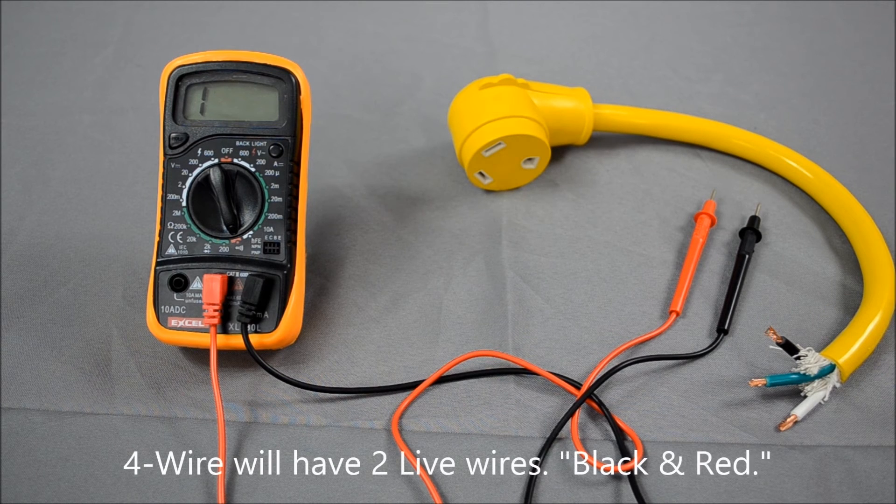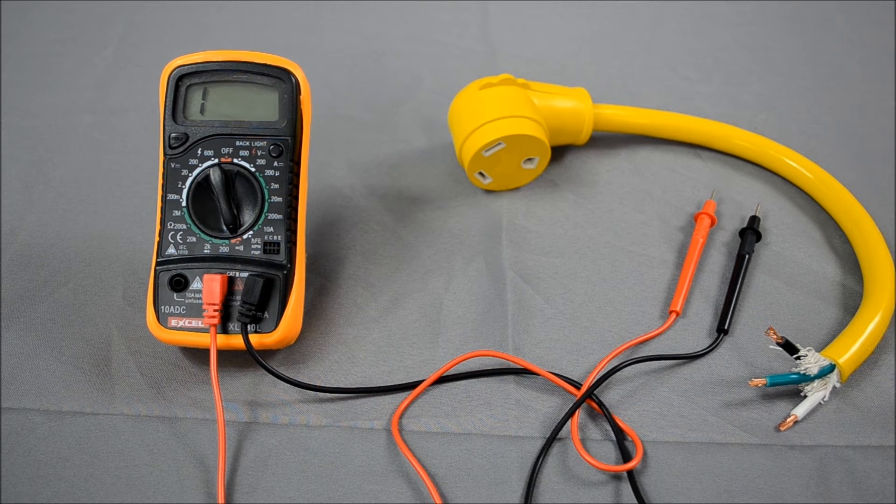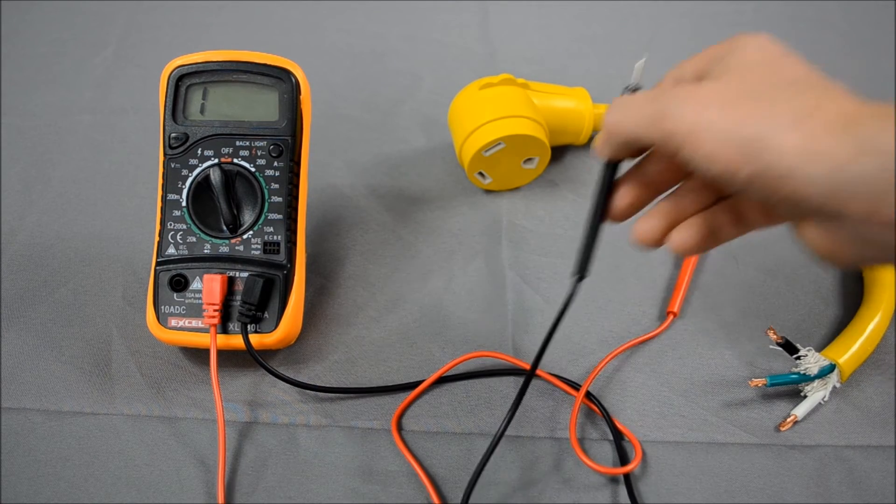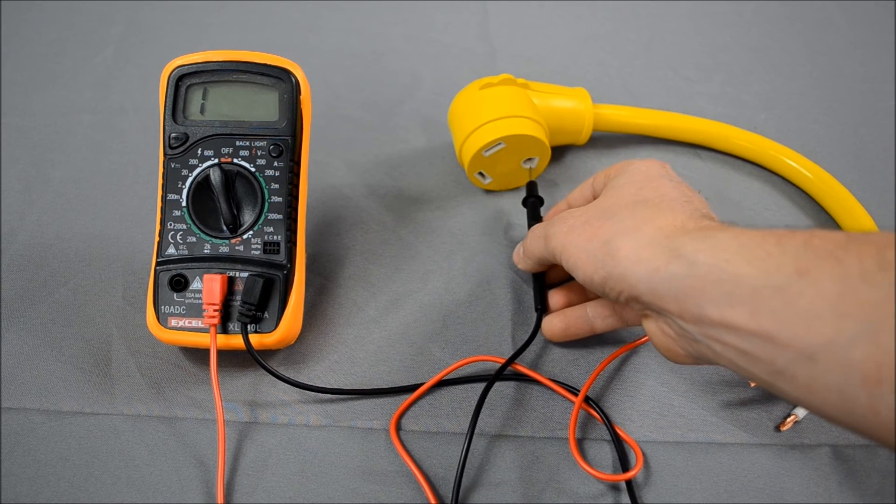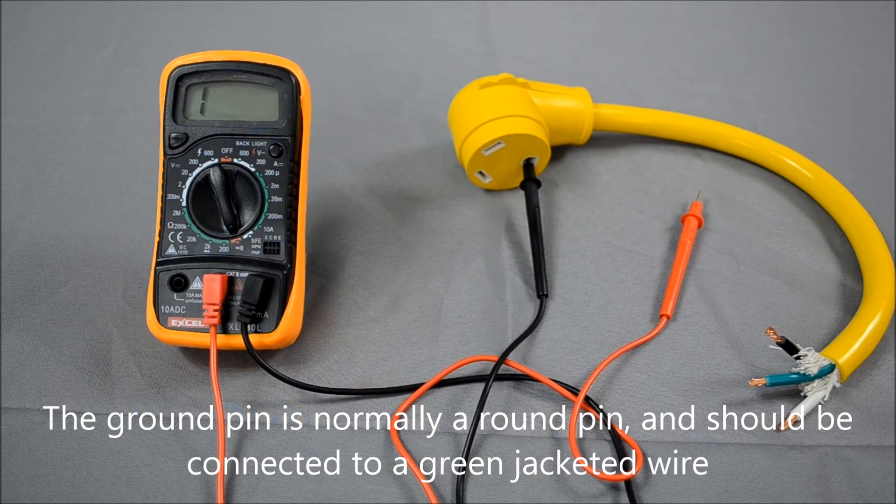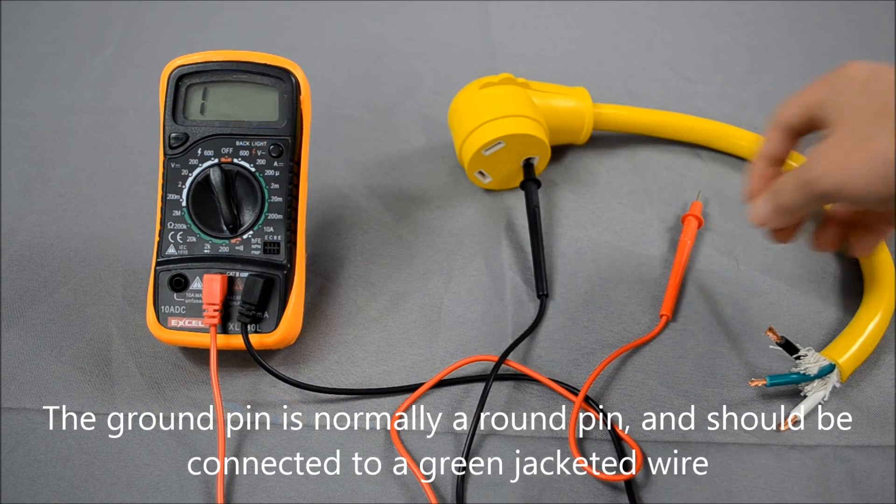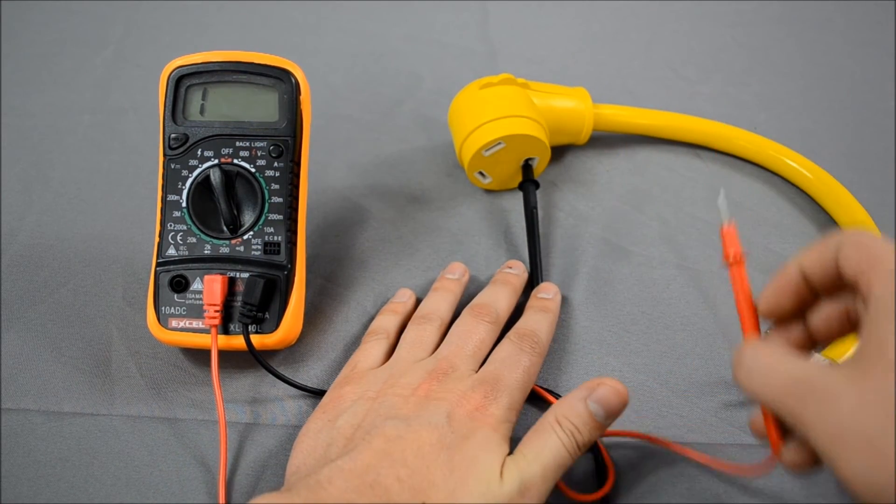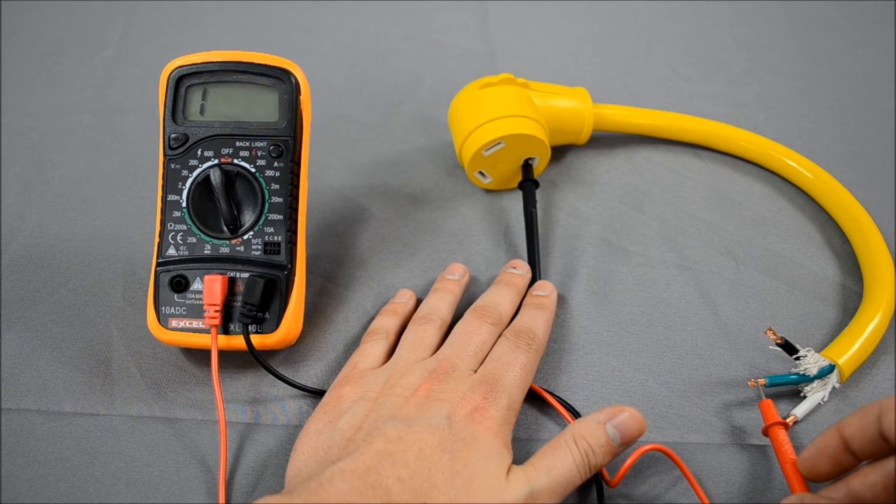Generally the ground pin is identified by a G on the plug. Go ahead and put one of your prongs inside the ground pin. Now ground is normally a green wire. When you put that in there, you should get a noise and the multimeter should show a reading.